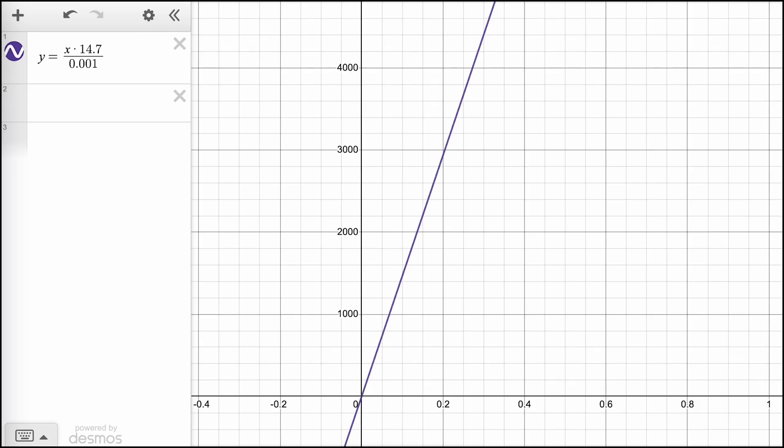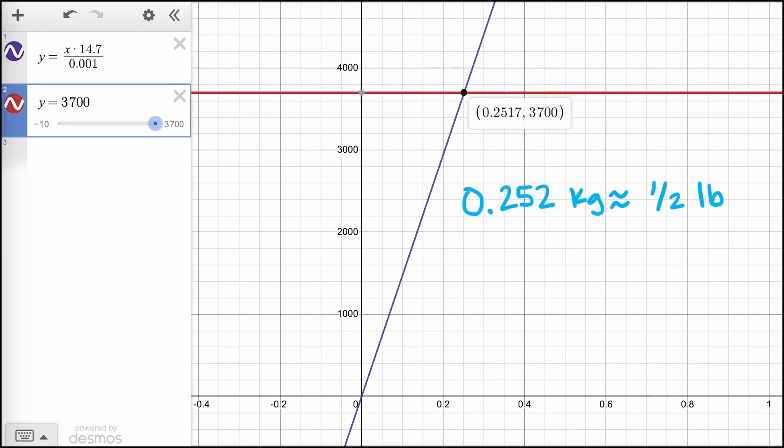We can see this visually in this graph as the intersection of our impact force graph with the line 3700. We see that if our penny had a mass of 0.252 kilograms, or about half a pound, it could become lethal, generating 3700 newtons of average impact force.